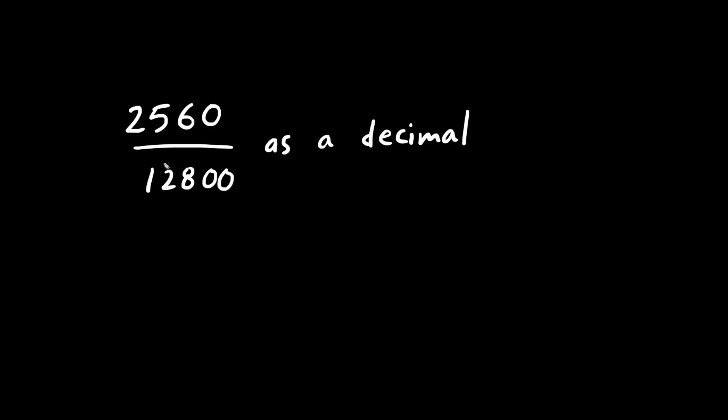Let's convert this fraction to a decimal number. We have some zeros at the end, so we can cancel these out. Essentially we're dividing top and bottom by 10. Now we have 256 over 1280. These are large numbers.